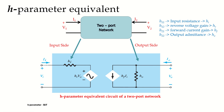This H-parameter model can easily be applied to three-terminal semiconductor devices like BJT, FET, etc. When a BJT is used as an amplifier, one terminal is common to both input and output. This common terminal forms the common line in the H-parameter model, allowing the transistor to be represented by its equivalent hybrid parameter model.